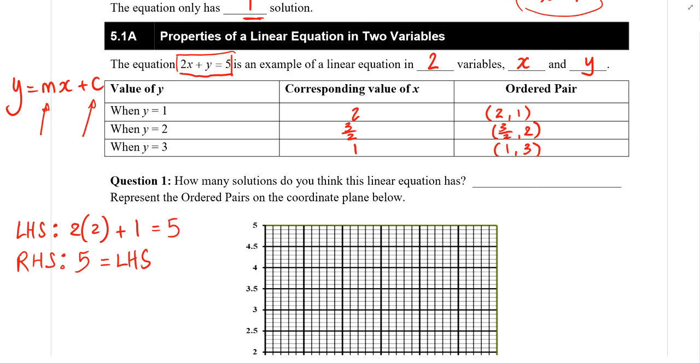What about the second row? When the left-hand side is equals to 3 over 2, when x equals to 3 over 2, we've got y equals to 2. We add them up and we get 5 again. So right-hand side is still equals to 5. So since the left-hand side and the right-hand side are the same, we conclude that when x equals to 3 over 2 and y equals to 2, we've got another solution.